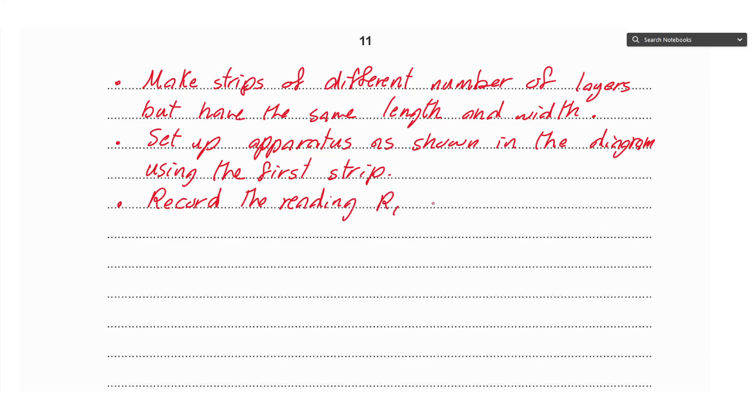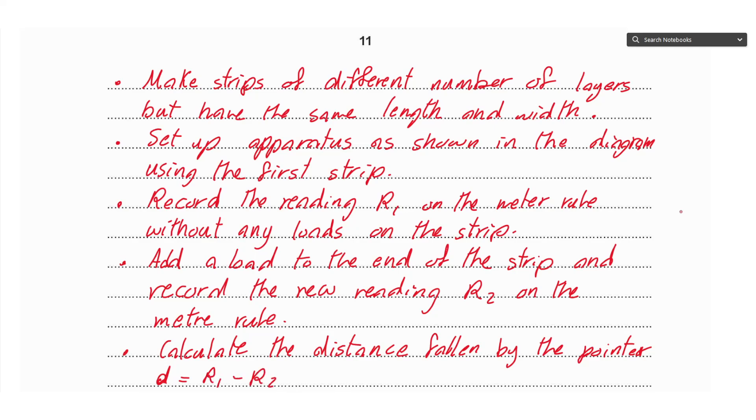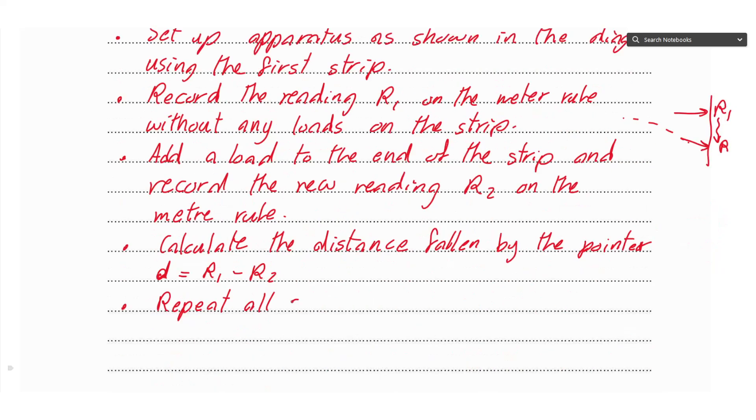After that, add a load to the end of the strip and record the new reading R₂ on the meter rule. Then calculate the distance fallen by the pointer—I'm going to call it d, which equals R₁ minus R₂. The pointer was pointing towards a higher reading at first, then when the strip bends the pointer points towards a lower reading. This is R₁ and this is R₂, and the distance fallen represents the bending. Now repeat the whole steps for strips of different number of layers but using the same load. So we have length, width, and the load as controlled variables.